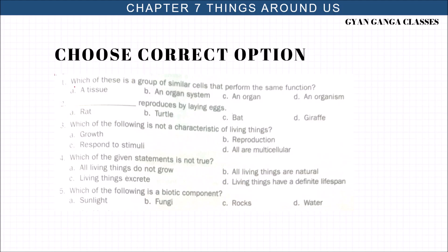Choose the correct option. Which of these is a group of similar cells that perform the same function? We learned that cell forms tissue, then tissue forms organ, then organ system, and finally there is a living organism. The options are tissue, organ system, organ or organism. Yes, it is tissue. Then which reproduces by laying eggs? Rat, turtle, bat or giraffe?